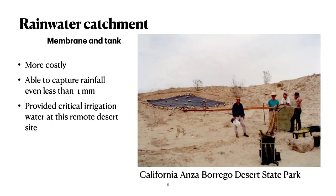At a smaller scale, we can catch water with a rainwater harvesting membrane. This one was set up in Anza Borrego Desert State Park for water at a very remote site — difficult to get to even with a four-wheel drive vehicle. It proved capable of capturing rainfall with even less than one millimeter of rain, providing critical irrigation water at this remote site at a relatively good cost.